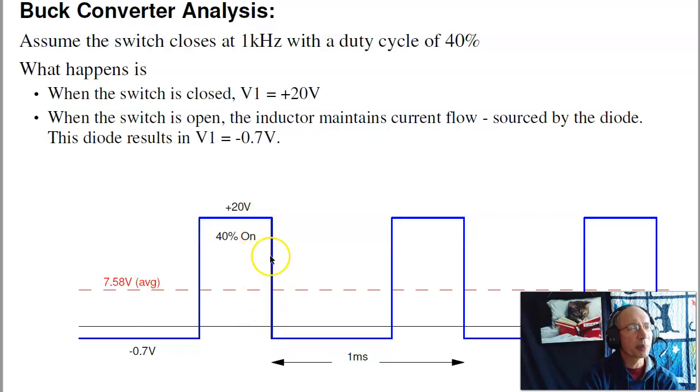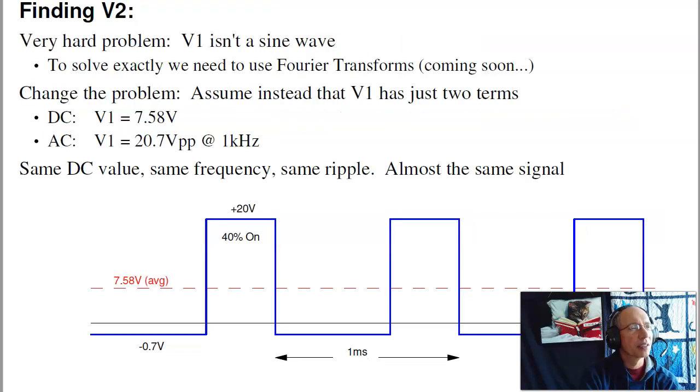Now to find V2, that's actually a hard problem. If the input was a constant, I could solve. If the input was a sine wave, I could solve. This isn't either one. So what we're going to do is use a typical engineering approach. If I have a problem that's hard to solve, change the problem. But change it in a way that it keeps the flavor of the old problem. And change it to one that you can solve. So here, let's pretend that V1 has an average of 7.58, same as the actual average. The frequency is 1 kilohertz. And the ripple is 20.7 volts peak to peak. With this approximation, I've got the same DC voltage, same peak to peak ripple, same frequency. It's almost the same waveform. It's not. Some answer will be slightly wrong. But I can check my answer in CircuitLab. It should be close. Again, it'll be a little bit different because this isn't a sine wave, and I'm treating it like a sine wave. That's typical engineering. Change the problem to one you can solve.